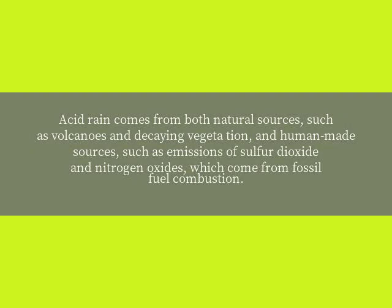Acid rain comes from both natural sources, such as volcanoes and decaying vegetation, and human-made sources, such as emissions of sulfur dioxide and nitrogen oxides, which come from fossil fuel combustion.